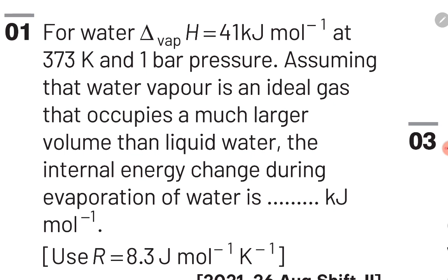Initially, the number of moles of gas equals 0, and finally the number of moles of gas is 1. So ΔN_g = 1 − 0 = 1. ΔH has already been given, and temperature is 373 K. By substituting the values, we can easily find the value of ΔU. Let's observe this in the solution in the next slide.